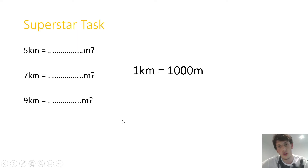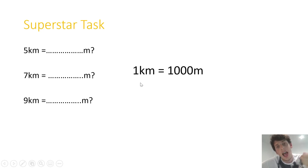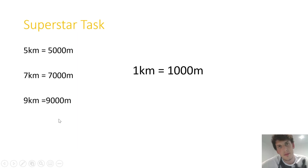So superstars, this is your task. I want you to tell me how many meters there are in these kilometers. How many meters in five kilometers? How many meters in seven kilometers? How many meters in nine kilometers? Remember, one kilometer is equal to 1,000 meters. Please pause the video, complete this task, and then press play when you want to go through the answers. Five kilometers equals 5,000 meters. Seven kilometers equals 7,000 meters. And nine kilometers equals 9,000 meters.